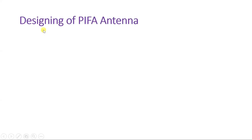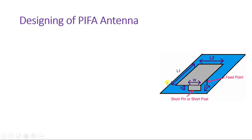Now, how to design the PIFA antenna. Based on need, we design it — it is not like some specific design is perfect, but based on need we change parameters. Different parameters are there: L1, L2, W, D, H. All those parameters are there, and based on them we can design it. Let us understand how those parameters are impacted and how they will change.